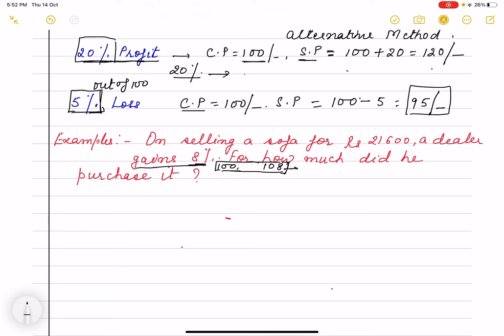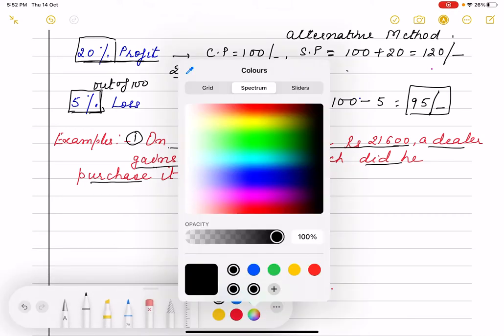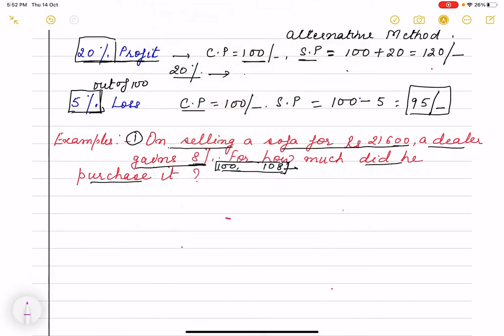So just go for the first question. On selling a sofa for rupees 21,600, a dealer gains 8 percent. For how much did he purchase it? We have to find purchase price. First of all just check what is given to you. Have you understood the question or not? Selling a sofa, that means we have selling price of sofa is given, that is 21,600 rupees. And what is profit or gain? Profit percent in percentage is given, 8 percent.